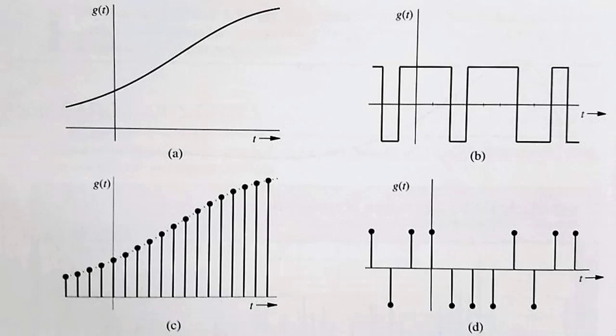In part B, we see a continuous time digital signal. And part D shows a discrete time digital signal. So if you connect the dots at part D using only lines that are horizontal or vertical to the t-axis, something like B may appear.